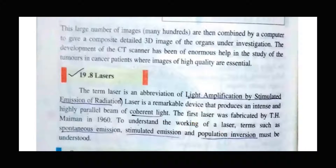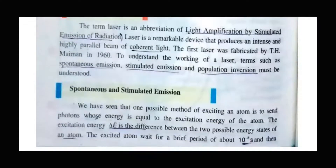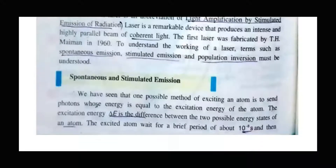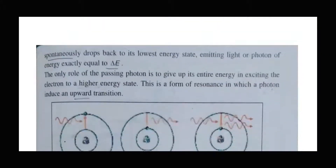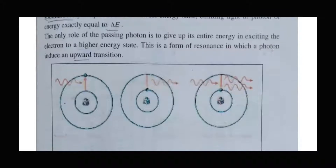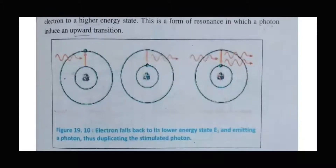To understand the working of a laser, we first have to understand stimulated emission, spontaneous emission, and population inversion. When we understand stimulated emission, we can easily understand population inversion. By understanding population inversion, we will learn about laser action and how the laser actually produces light. When laser action is achieved, the laser begins to produce.